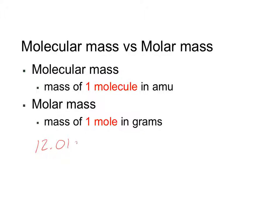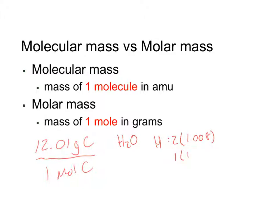This means that there are 12.01 grams of carbon per every one mole of carbon. Similarly, we can calculate the molar mass of a compound by adding up the molar masses of all the elements in that compound. For instance, if we want to calculate the molar mass of water, we have two hydrogen atoms, so we have two times the molar mass of hydrogen, plus one oxygen atom times the molar mass of oxygen, and then we add those together for a molar mass of 18.16 grams per mole.